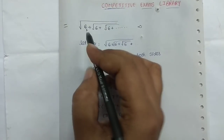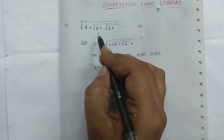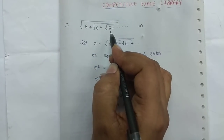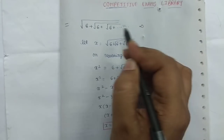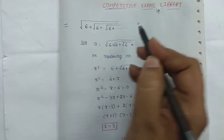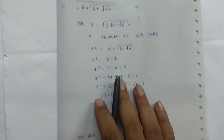So, let's look at root 6 plus root 6 plus root 6 plus infinity. Let's look at this sum. In general, this process is straightforward — we apply a standard approach.